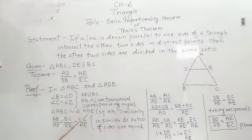Now, by AA rule of similarity, triangle ABC is similar to triangle ADE.